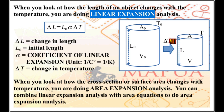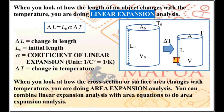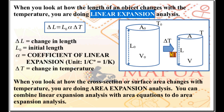Say the object undergoes a change in temperature — there is delta T — and the temperature changes from initial temperature T-naught to final temperature T. For the sake of our discussion, say there is a temperature decrease, that is, T is less than T-naught. The object will contract and become smaller. From initial length L-naught, the length becomes L, the cross-section area becomes A, and the volume becomes V.